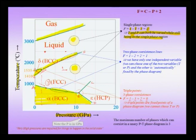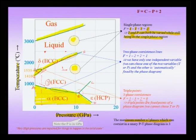The maximum number of phases which can coexist in a unary pressure-temperature diagram is 3, and as noted before, this happens at invariant points like B and F, where three phases coexist. The degrees of freedom in various regions, lines, and points are marked in the diagram, and the effect of pressure on phase stability is also discussed.